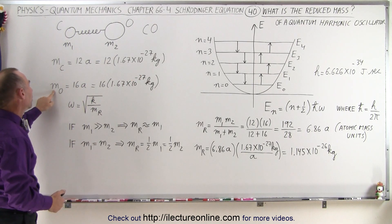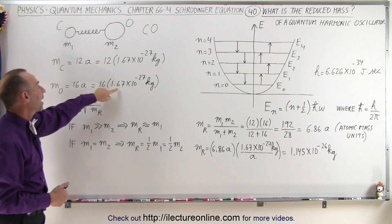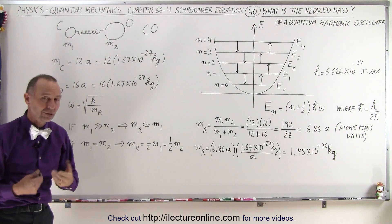And for the oxygen atom, the mass would be 16 atomic mass units, which therefore is 16 times the mass of one atomic mass unit in kilograms.